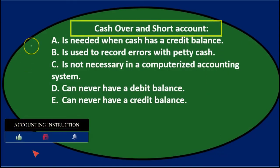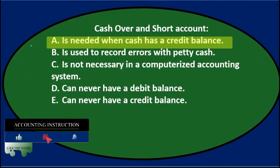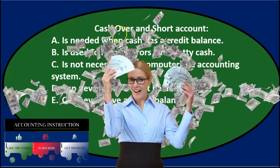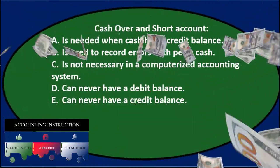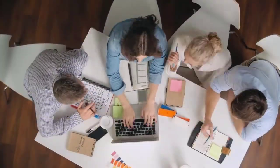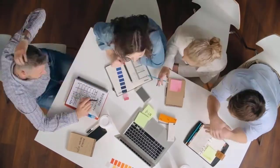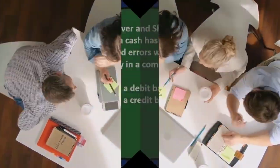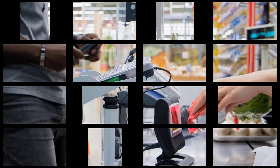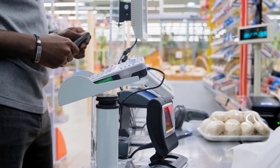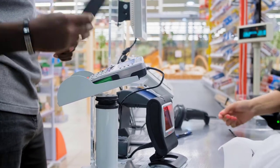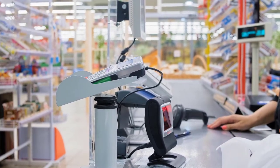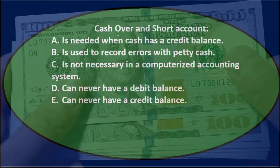Cash over short account: A is needed when cash has a credit balance. The cash over short account is really recording a process where we have the cash register receipts showing how much cash we should have gotten in terms of cash sales, and then we're doing the physical count of cash. If those things don't line up, we record the difference to the cash over short account.